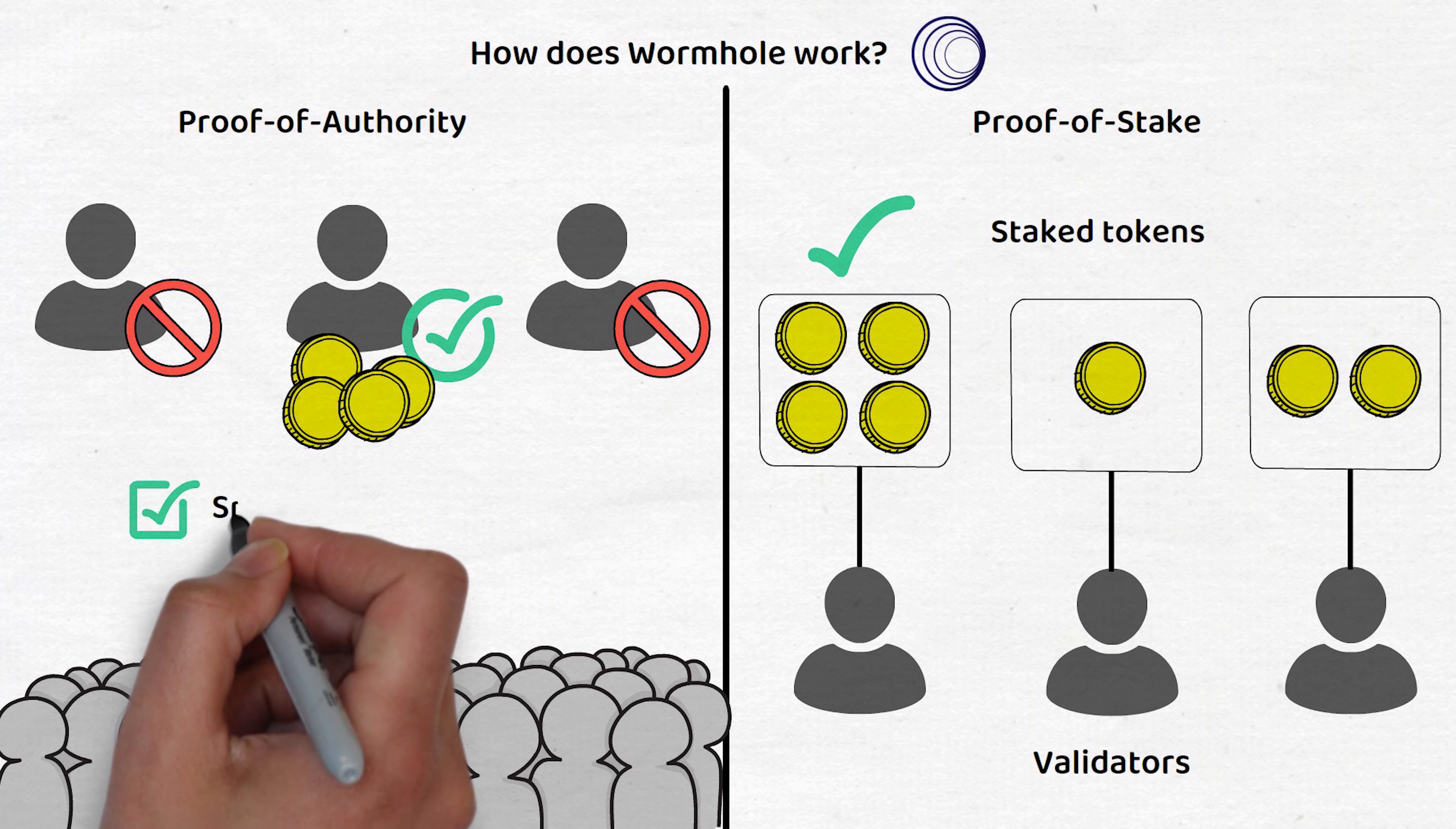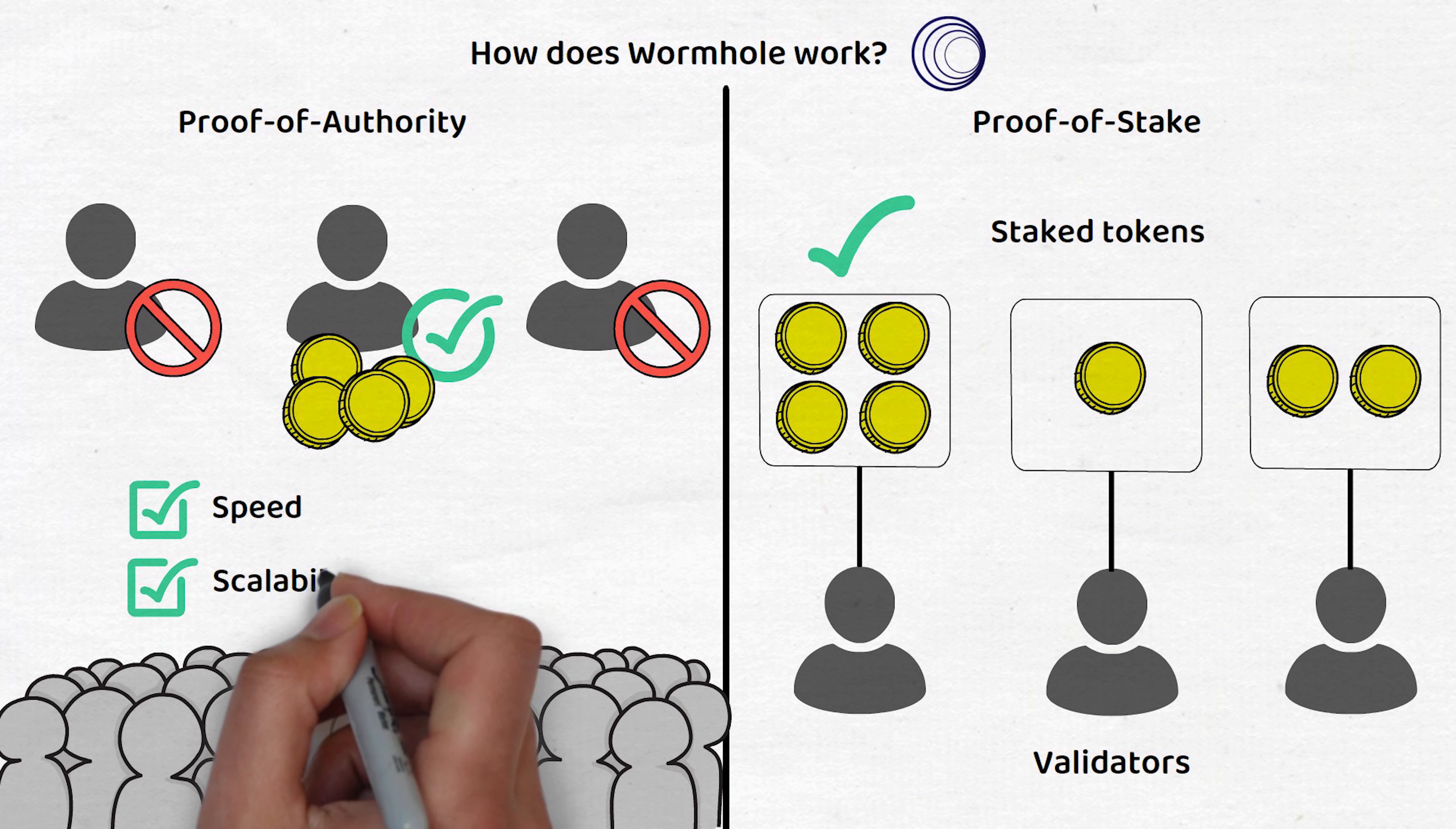The benefits here are mostly speed and scalability, as having so few nodes allows the network to quickly achieve consensus. But how does a user make a request to another blockchain through Wormhole? In short...